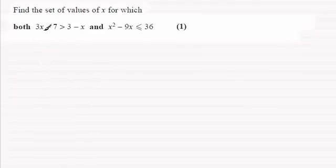Now earlier when we did the first inequality, let's just put it down here, for 3x minus 7 is greater than 3 minus x, we found the solution set was x is greater than 2 and a half.